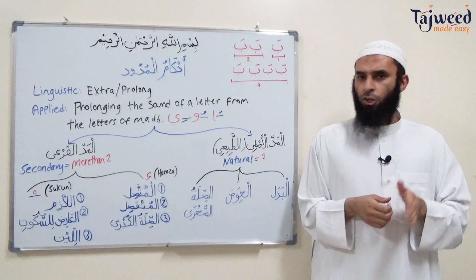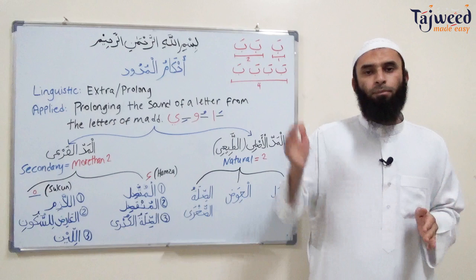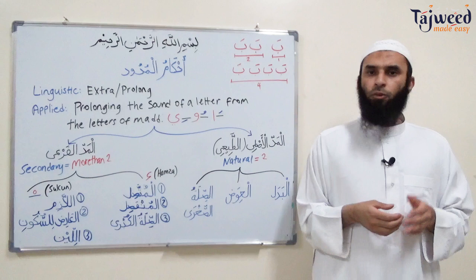So it can be two haraka, it can be four, it can be five, or six. Minimum two, maximum six. There's no more than six counts. Now, what does a count mean? How do you measure a count? If we say this mad is two counts, or four counts, or two haraka, four haraka — how do you measure?